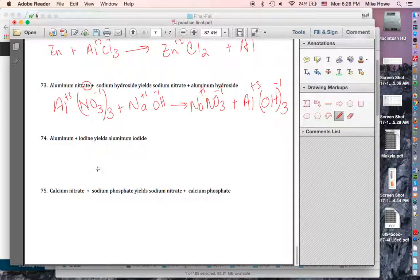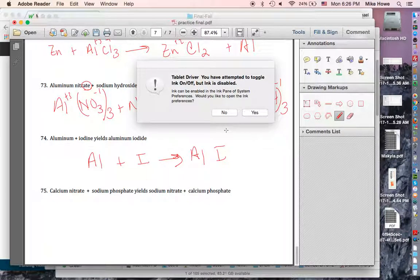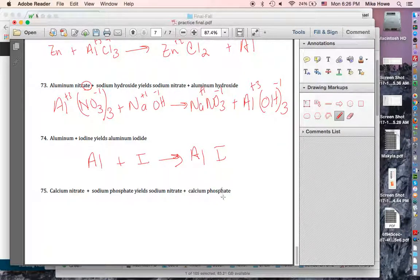Aluminum plus iodine yields aluminum iodide. So iodine, aluminum plus iodine yields aluminum iodide. That's an arrow. Now, there's something that I've mentioned to you before a couple times, but I haven't emphasized it a lot. But there are some elements that occur in pairs when they're by themselves. They are bromine, iodine, nitrogen, chlorine, hydrogen,